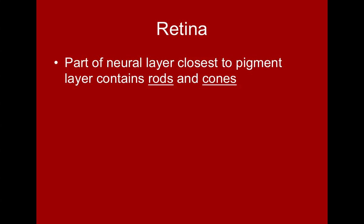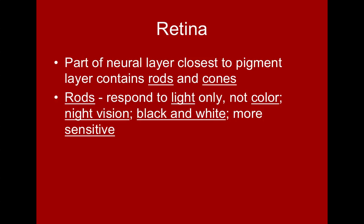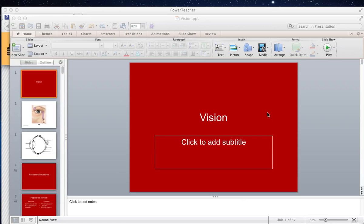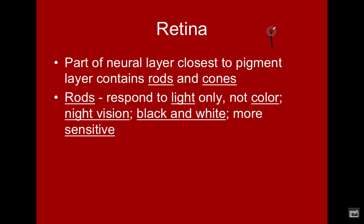Rods are the type of photoreceptor that respond to light only — either it's there or it's not. They don't respond to differences in color. This is what provides us with our night vision, which is typically in black and white. Rods are more sensitive and will trigger with less stimulation than our cones. They actually get their name because they have a rod shape — blunt and squared off.